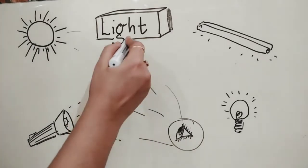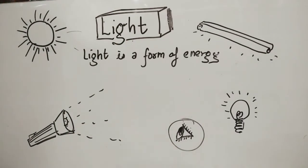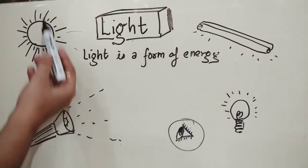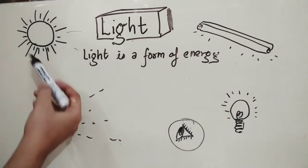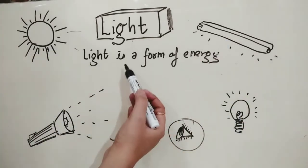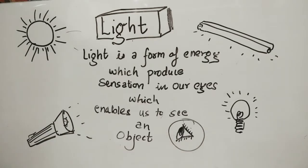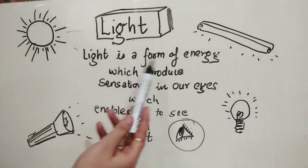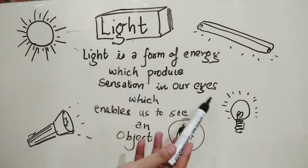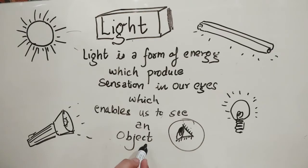So, actually what is light? Light is defined as a form of energy which we are getting naturally, for example from the sun, or artificially from various objects, which enable us to see an object. Light is a form of energy which produces sensation in our eyes which enables us to see an object.